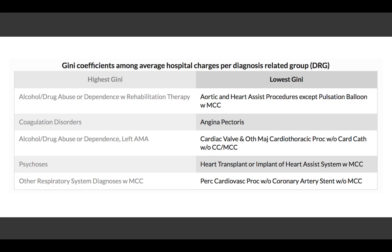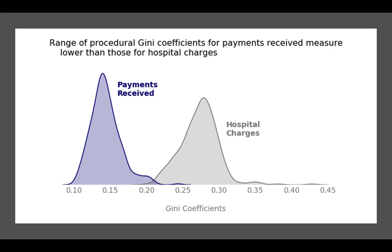I wanted to take this a little bit further. Is it such that some of those procedures with really high Gini coefficients need more standardization? Instead of looking at just the hospital charges, let's also look at the actual payments received by those hospitals — typically payments that Medicare is actually providing for that service. Looking at the Gini coefficients for all the different procedures but for payments received, those Gini coefficients are lower for every single procedure than what the hospital actually charges. This indicates that Medicare already has contracts in place to standardize the payments it will pay for a given procedure, no matter which hospital you're at.